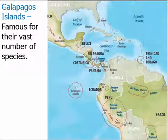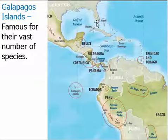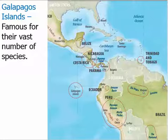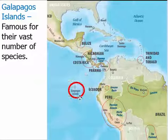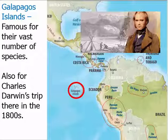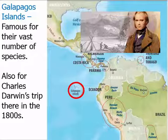Now let's look at a famous example of variation and adaptations. The Galapagos Islands are off the west coast of South America, famous for their vast number of species — including weird species found nowhere else, like aquatic iguanas that jump into the ocean and swim around. The Galapagos Islands are also famous for Charles Darwin, who took a trip in the 1800s on a boat called the Beagle. He is well known for the theory of evolution, and we'll talk about him again in the future.